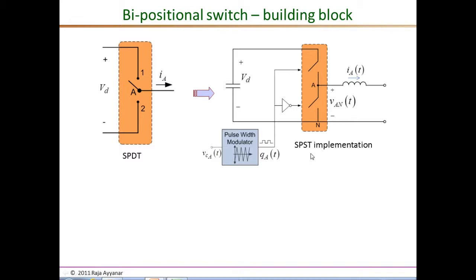If you want to connect point A to the positive end, the top switch is on and the bottom switch is off. If you want to connect pole A to the negative end, the bottom switch is on and the top switch is off. We should never have both switches on simultaneously, and that is ensured by the switching pattern. The pulse width modulator converts a control voltage to switching pulses — the signal is given directly to the top switch and inverted for the bottom switch.